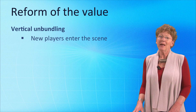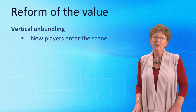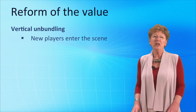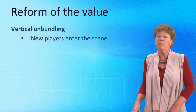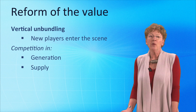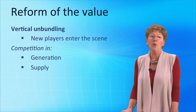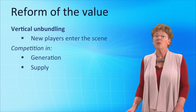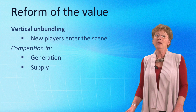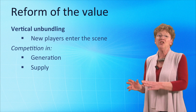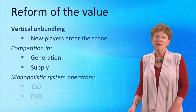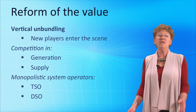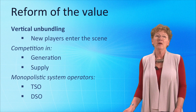In recent decades, however, processes of infrastructure reform have induced so-called vertical unbundling of the electricity value chain. In many countries, power generation has largely been privatized and now takes place in a competitive market. Similarly, energy wholesale and even energy retail markets have been opened up to competition. With these markets, new players have entered the scene, such as market operators, traders and brokers. In between power generation and supply to end users is transport over grids, which are still owned, operated and planned by monopolistic system operators — known as TSOs (transmission system operators) and DSOs (distribution system operators).